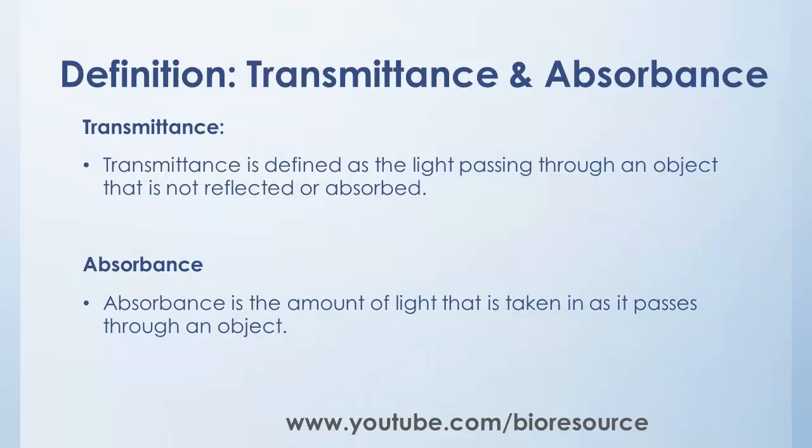Transmittance is defined as the light passing through an object that is not reflected or absorbed. So when light is passed through an object, the light which is coming out through that object is called transmittance.